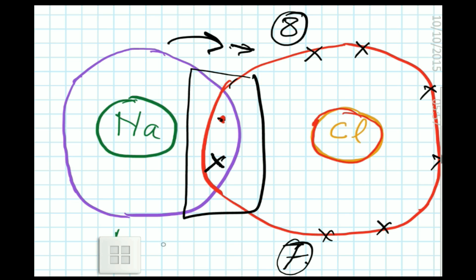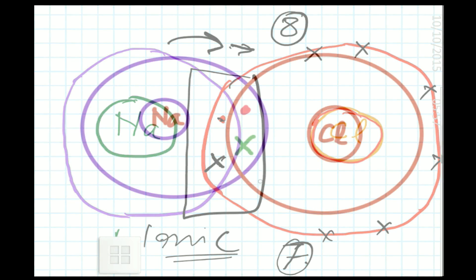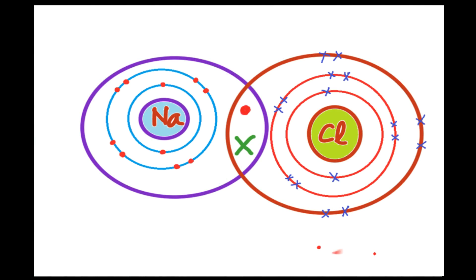The dot and cross structure is now clear. What I have shown with the atomic structure and dot and cross notation is what you need to represent. If you liked the video, please subscribe.